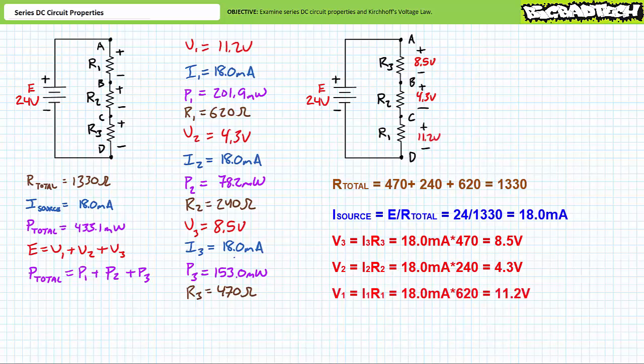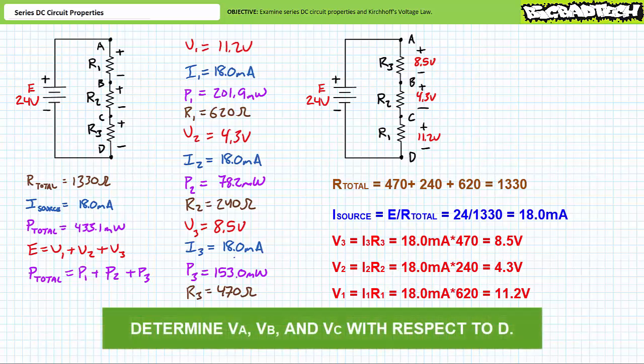As a result, R3 still experiences an 8.5 volt drop positive to negative top to bottom, R2 still experiences a 4.3 volt drop, and R1 still experiences an 11.2 volt drop. In short, nothing experienced by the individual elements changes. What does change is the nodal voltages for the larger circuit. Although the entire 24-volt rise induced by the source is still inevitably dropped, the voltage drops are apportioned differently between these nodes. Use Kirchhoff's voltage law to calculate voltage at node A, B, and C with respect to D for the modified circuit.